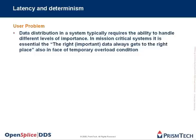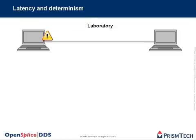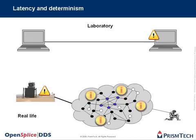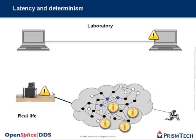First of all, latency and determinism, which is given by the user problem that data distribution in a system typically requires the ability to handle different levels of importance. The right important data should always get to the right place, also in a phase of temporary overload condition. Typically, when people try to evaluate this aspect of their DDS implementation, they start out with a laboratory situation where two computing nodes are sending messages to each other, and latency is measured. However, this does not reflect the situation in real life, where we have a much more complex network, with all kinds of data floating around in the network, with different kinds of loads at different moments in time.